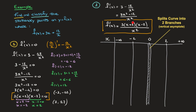Each factor in f'(x) creates a new row in the sign table where we study its sign. The first factor is 3. In each of the four cells I indicate whether the factor is positive or negative for x-values in that interval. Since 3 is always positive regardless of x, I write plus in all four cells.